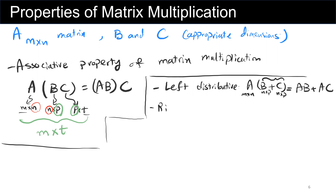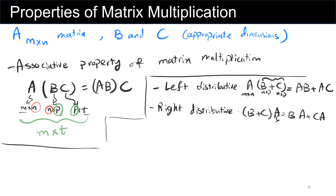The right distributive property states that (B plus C) multiplied by A equals BA plus CA. If A is m by n, then C should be p by m and B should be p by m as well, because the number of columns in C or B must equal the number of rows in matrix A.